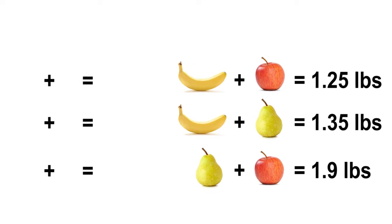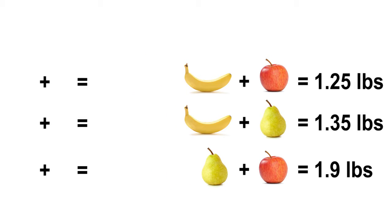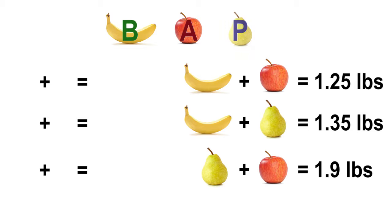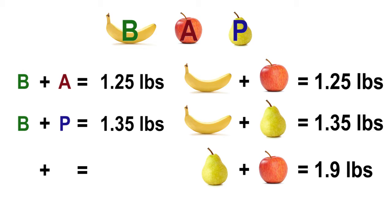Let's rewrite the equations using variables. b will represent bananas, a will represent apples, and p will represent the pears. The first equation is b plus a equals 1 and 25 hundredths pounds. The second equation is b plus p equals 1 and 35 hundredths pounds. The third equation is p plus a equals 1 and 9 tenths pounds.